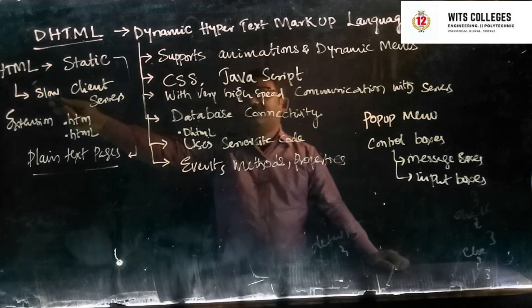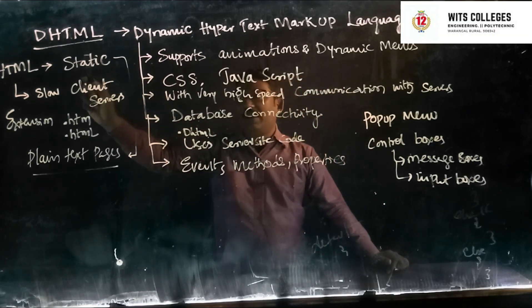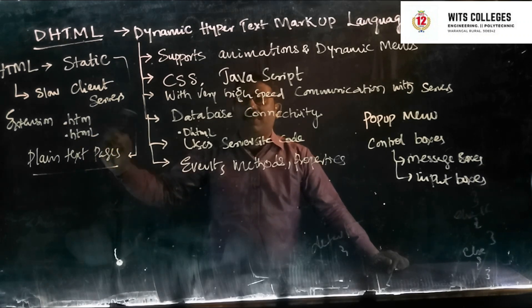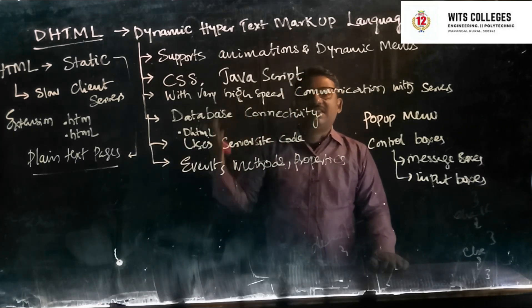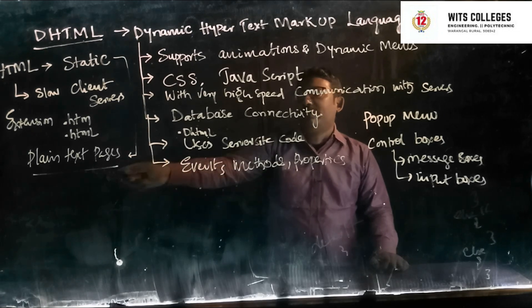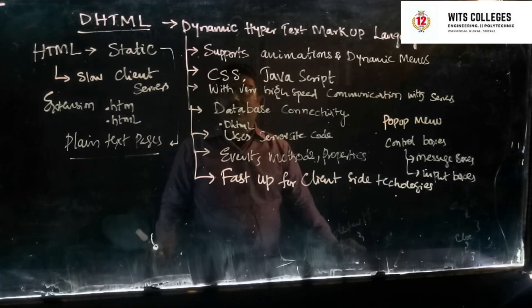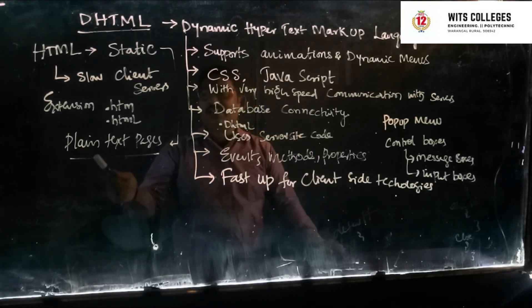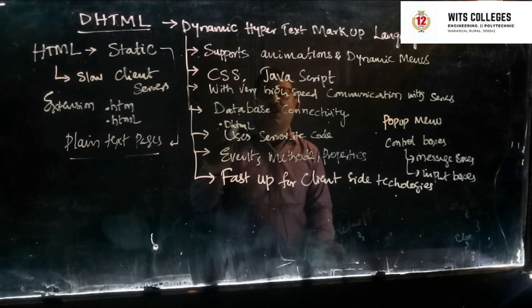Once again, to revise: HTML means Hypertext Markup Language, which is static. It is slow for the client as well as the server. The extension is .htm or .html and it produces plain text pages. A website with simple HTML will have plain text pages which are interlinked. Dynamic interaction is not possible with HTML. DHTML is for dynamic web pages and supports animations and dynamic menus.